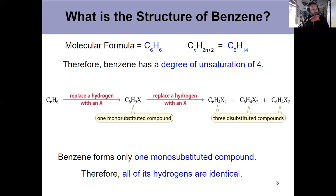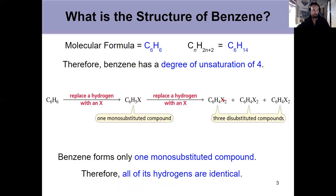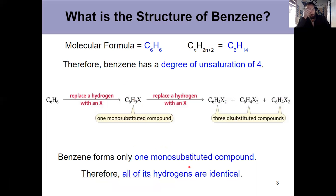And if I take benzene and replace it with X, call it a halogen in this case, I get a single monosubstituted compound. If I do it again, then I get three different disubstituted compounds. And the fact that it forms only one monosubstituted compound tells you that all of the hydrogens in benzene are identical. So that eliminates the fact that it could be a straight chain of six carbons, because the hydrogens on the end would be different from the hydrogens in the middle.